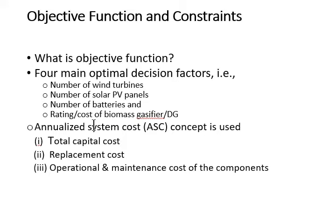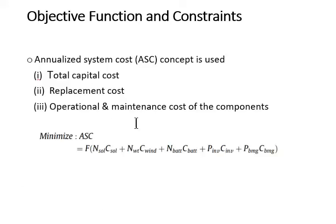Annualized system cost consists of total capital cost, replacement cost, and operational and maintenance cost of the components. Installation and civil works costs are incorporated in the capital costs of the components. It is calculated by this following relationship.